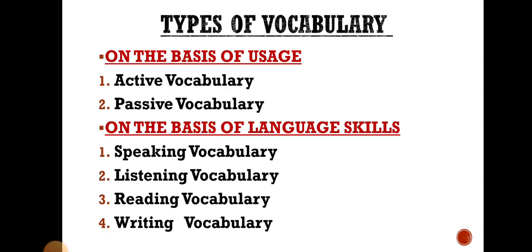Next come the types of vocabulary. On the basis of usage and on the basis of language skills, we have two categories. On the basis of usage, there are two types: active vocabulary and passive vocabulary. On the basis of language skills, there are four types: speaking vocabulary, listening vocabulary, reading vocabulary, and writing vocabulary.